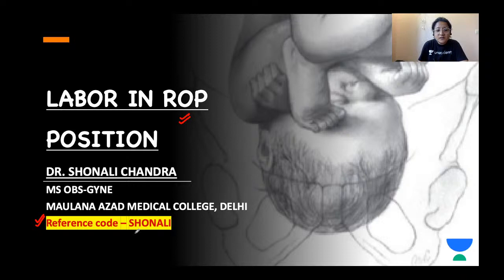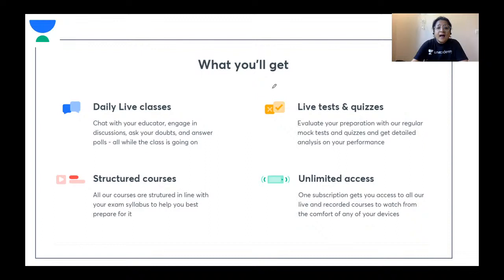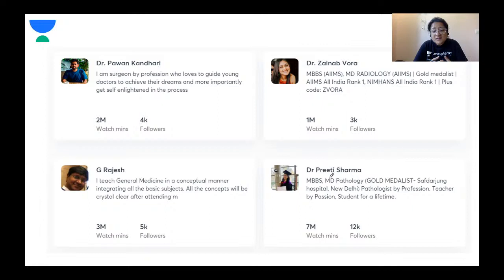I've highlighted my referral code here which is S-H-O-N-A-L-I. If you take an Academy subscription of the Plus format, you can avail my code to get a 10% discount. You can also download the Academy learning app on your mobile phones and get notified about upcoming live sessions, special classes, batch courses, and crash courses. You'll get daily live classes where you can interact with your educator, ask your doubts, and get them solved — like a live classroom experience.